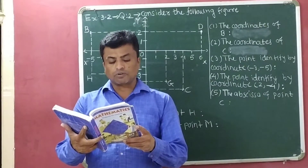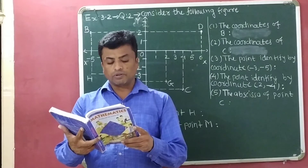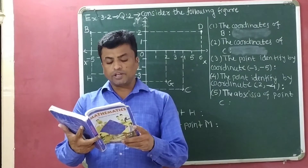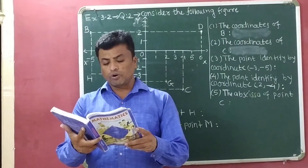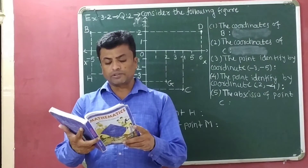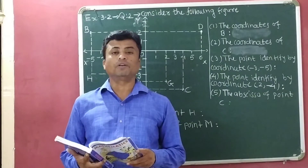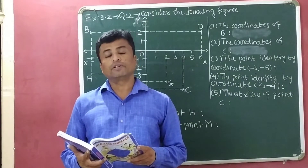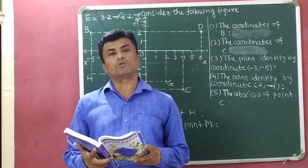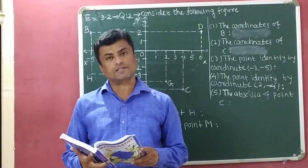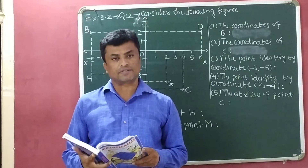Write the answer of each of the following questions. Question 1: What is the name of the horizontal and vertical lines drawn to determine the position of any point in the Cartesian plane? In a Cartesian plane, the horizontal line is known as x-axis and the vertical line is known as y-axis.